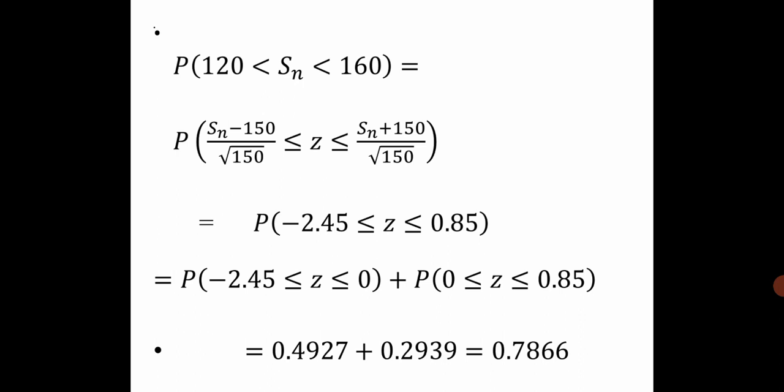After that, we split it into two terms: minus 2.45 to 0, plus 0 to 0.85. Therefore, P(minus 2.45 ≤ Z ≤ 0) plus P(0 ≤ Z ≤ 0.85). From the normal variate table, we get P(minus 2.45 ≤ Z ≤ 0.85) equals 0.2939 plus 0.4927. Therefore, the total is 0.7866.